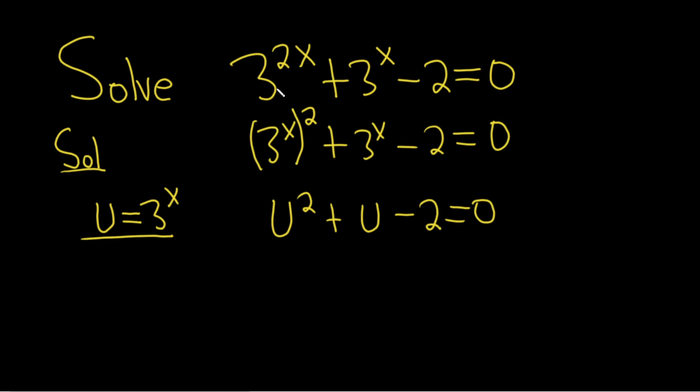You can always do this when you have these types of equations that turn into quadratics. This should factor. We have (u)(u) equal to 0. We need two numbers that multiply to 2, so obviously 1 and 2.